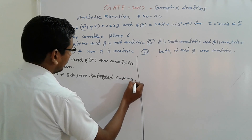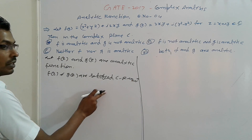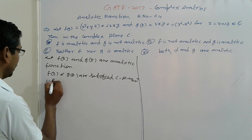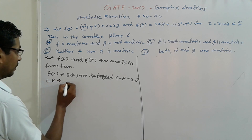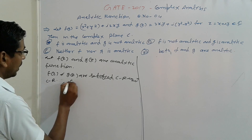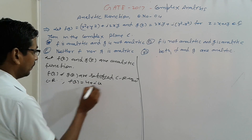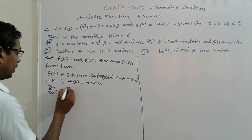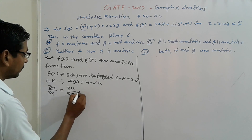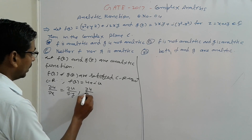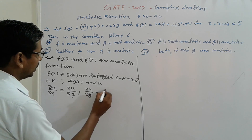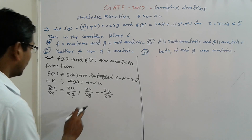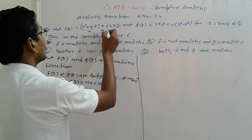What are the CR equations? Suppose f(z) = u + iv. The CR equations are: del u / del x = del v / del y, and del u / del y = − del v / del x. Now suppose this function is u + iv.